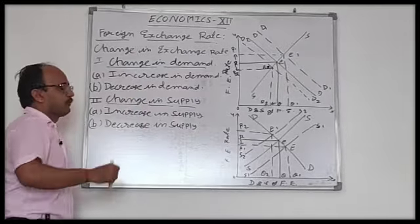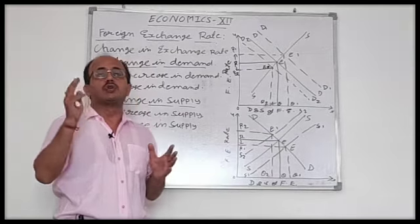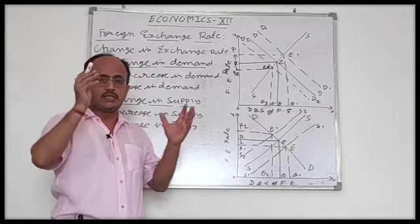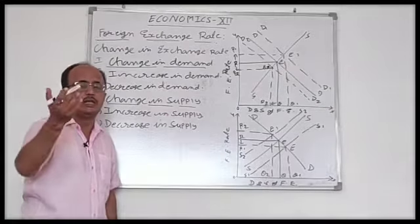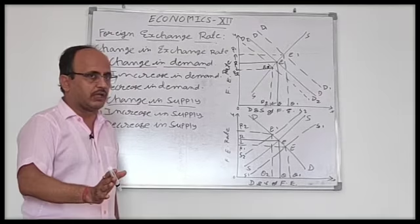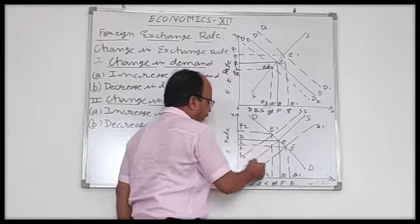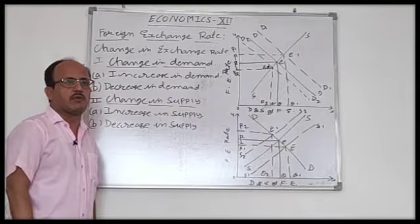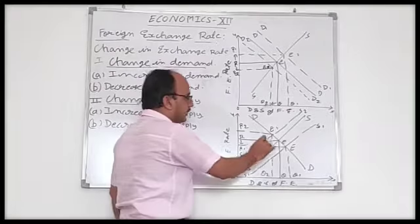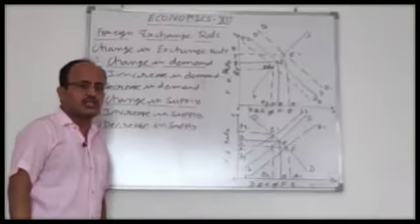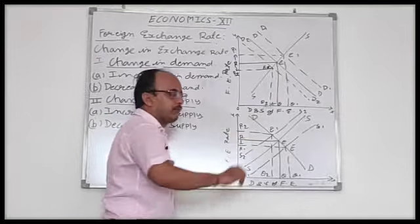Now this is the second part of today's class — it is change in supply. If supply is changed, what happens? Change in supply means if supply increases or decreases. In this diagram also, DD is the demand curve of foreign exchange and SS is the supply curve of foreign exchange. They intersect each other at the equilibrium key point, giving foreign exchange rate OR and equilibrium quantity OQ.